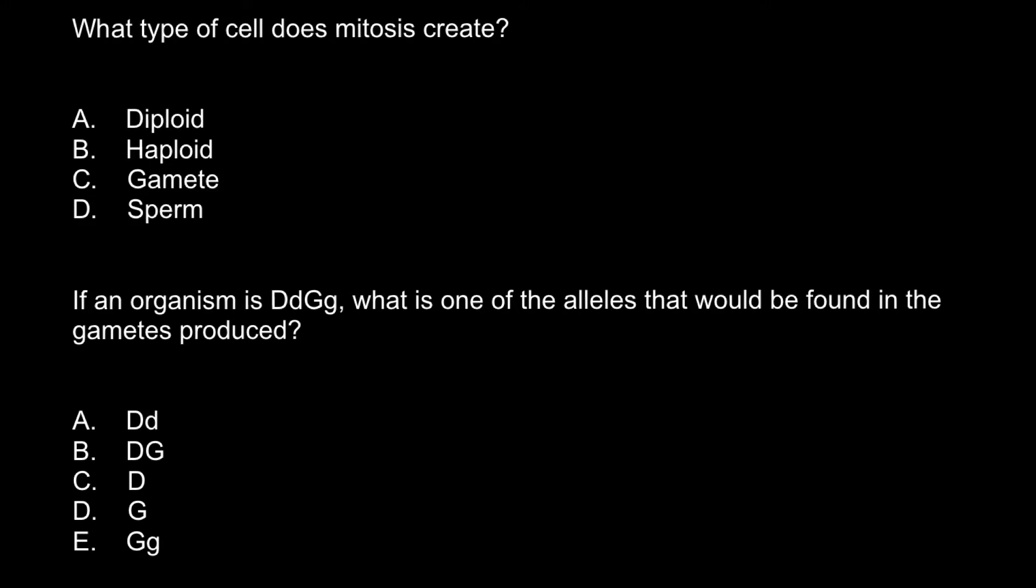So here's the first question. What type of cell does mitosis create? Answer A: diploid, B: haploid, C: gamete, and D: sperm.